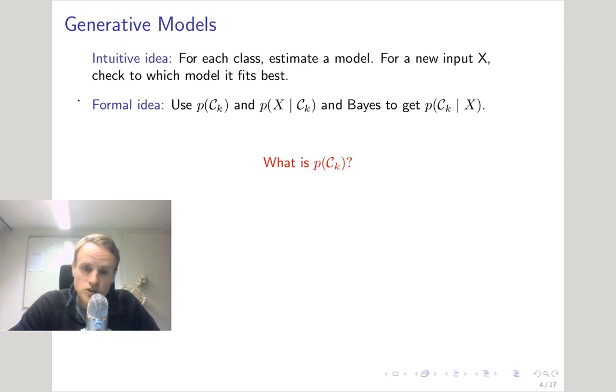So what does the probability of C sub K give us intuitively? Come on. If you said something along the lines of the probability that an unseen training point belongs to class K, then good job.